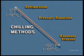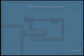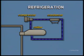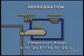Each method operates in a specific temperature range. In refrigeration, an external refrigeration system using either propane or freon chills the gas stream. The temperature range for refrigeration is zero degrees to minus 20 degrees Fahrenheit.